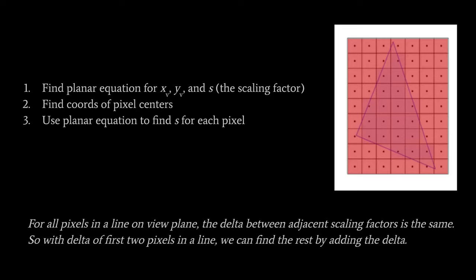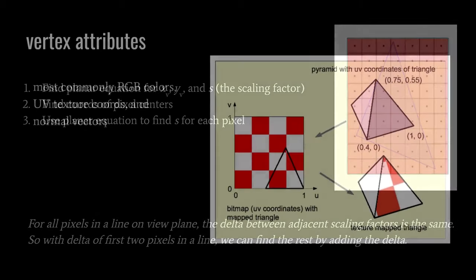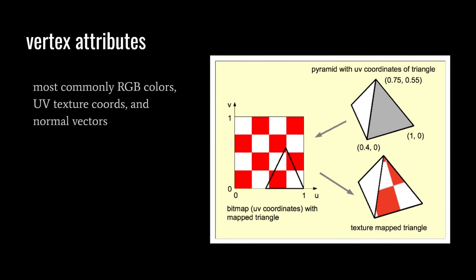We're not quite done, because we don't really care about the 3D Cartesian coordinates. What we really want are interpolations of the vertex attributes. Vertex attributes can be whatever we want — data associated with each vertex that influences how we render. The most common kinds are RGB colors, UV texture coordinates, and normal vectors. Color values can determine what the pixel colors should be, and normal vectors come into play later for lighting calculations, where we want smooth lighting effects that disguise the angularity of our triangles.